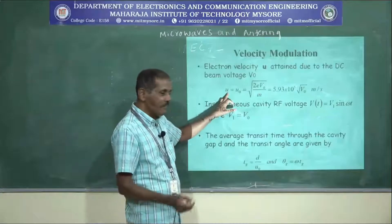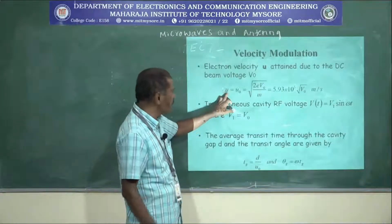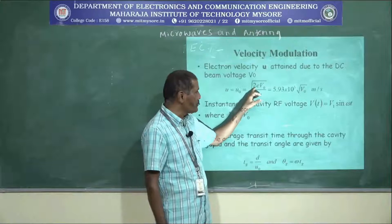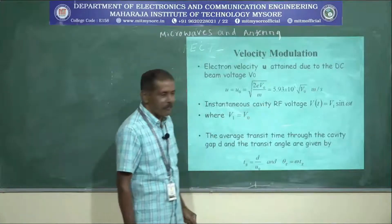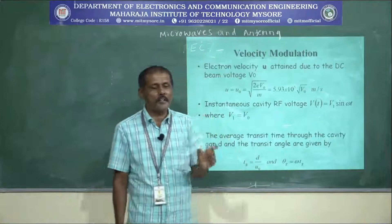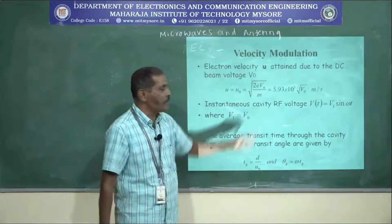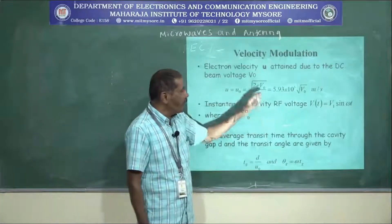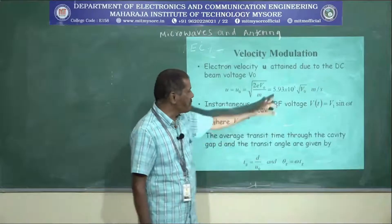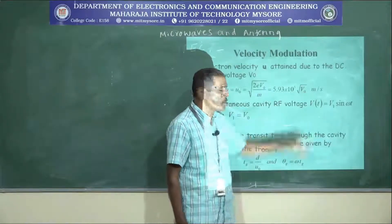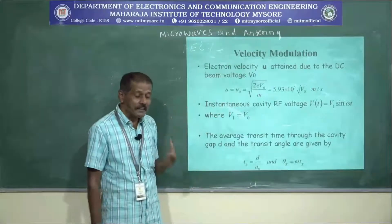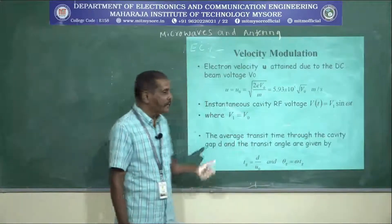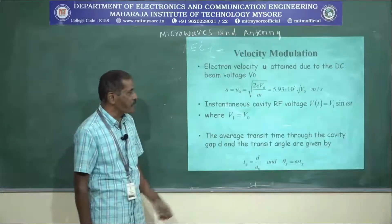The velocity of the electrons when moving through the grid is calculated from: U = U0 = √(2eV0/m), where V0 is the voltage applied to the cavity grid, m is the mass of the electron, and e is the charge of the electron. Substituting these values gives 5.93 × 10^5 × √V0 meters per second. That means the electrons emitted from the cathode are moving with this velocity when passing through the grid.